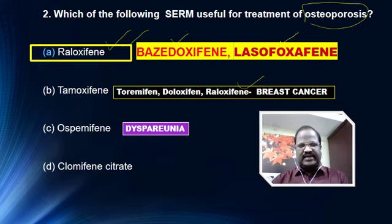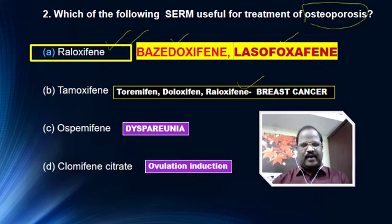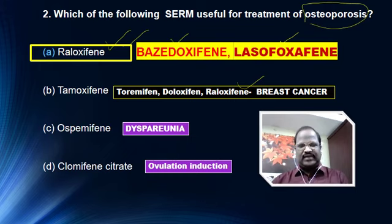In some people reaching age 37 or 40, estrogen deficiency occurs, causing vaginal dryness, and during coitus they may feel pain — called dyspareunia. So for treatment of vaginal dryness, we have a newer drug called ospemifene. The last option, clomiphene citrate, is a famous drug useful for treatment of anovulatory infertility — an ovulation-inducing agent.